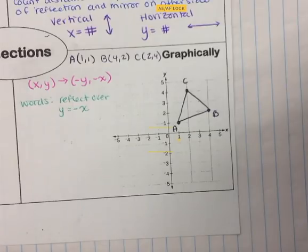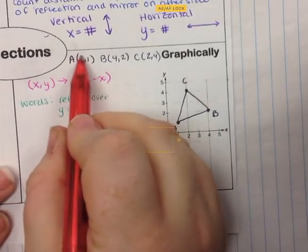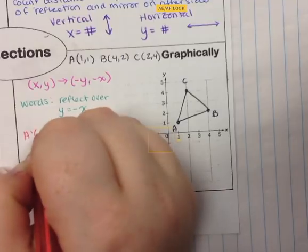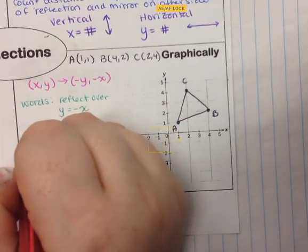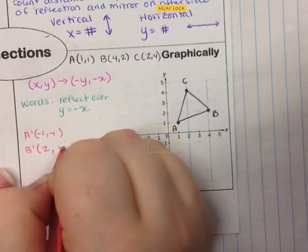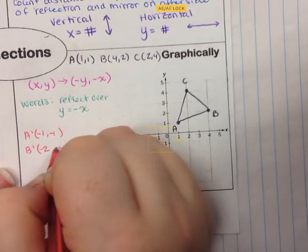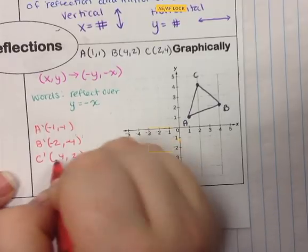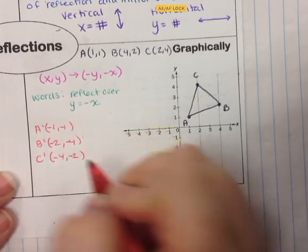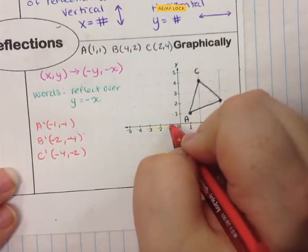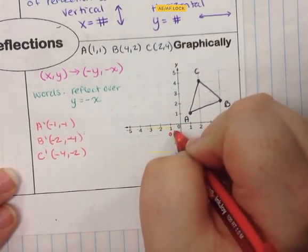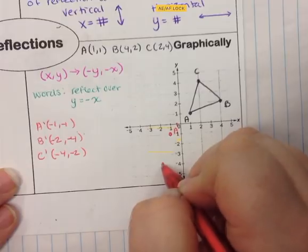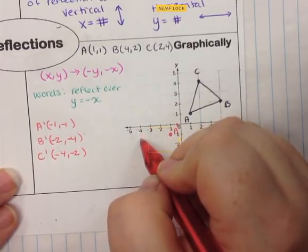To apply the rule to our coordinates, we flip first and then negate. A prime: flip (1,1) to get (1,1), then negate both — A' is (-1, -1). B prime: flip (4,2) to get (2,4), then negate both — B' is (-2, -4), since both were originally positive. C prime: flip (2,4) to get (4,2), then negate both — C' is (-4, -2). Now we can graph these.